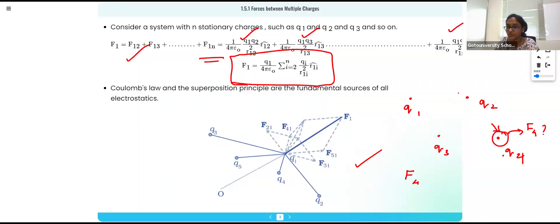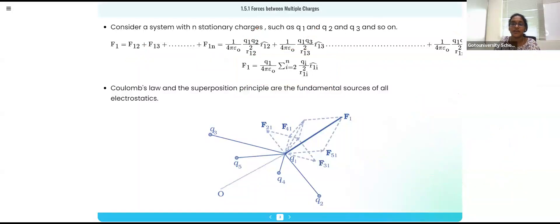So I can write F41 plus, because of this, F43, and because of two, F42. Everything will give us the value of F4. So this is how we will get the values of the multiple charges.